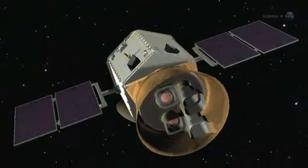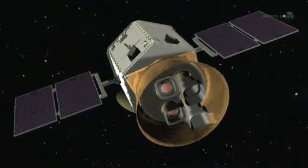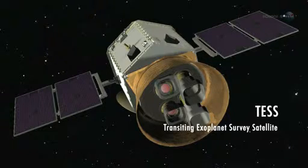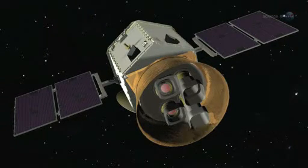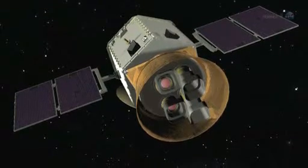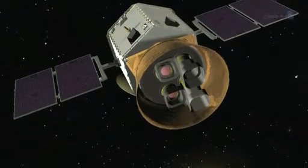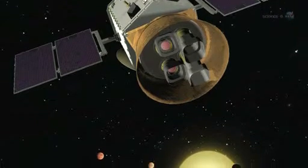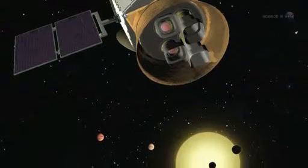NASA is also considering an observatory named TESS, the Transiting Exoplanet Survey Satellite. Supported in part by Google, the MIT-led mission is specifically designed to find exoplanets in the local galactic neighborhood. TESS would study hundreds of stars within 50 light-years of Earth, close enough to study in some detail.